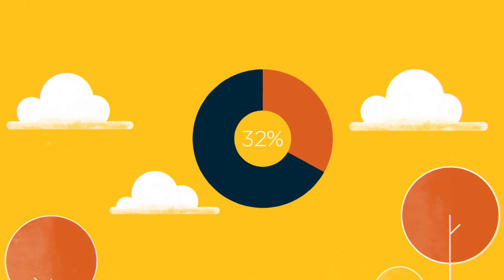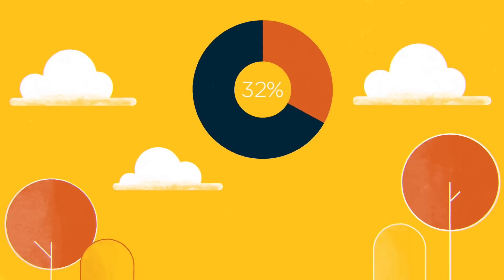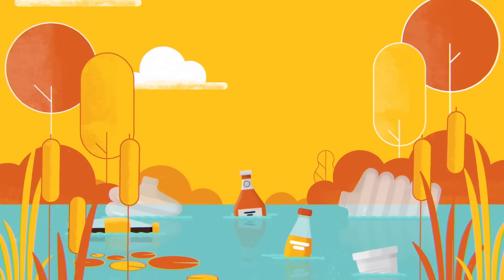And that nearly a third of all plastic packaging leaks into ecosystems, where it can stay around for hundreds of years.